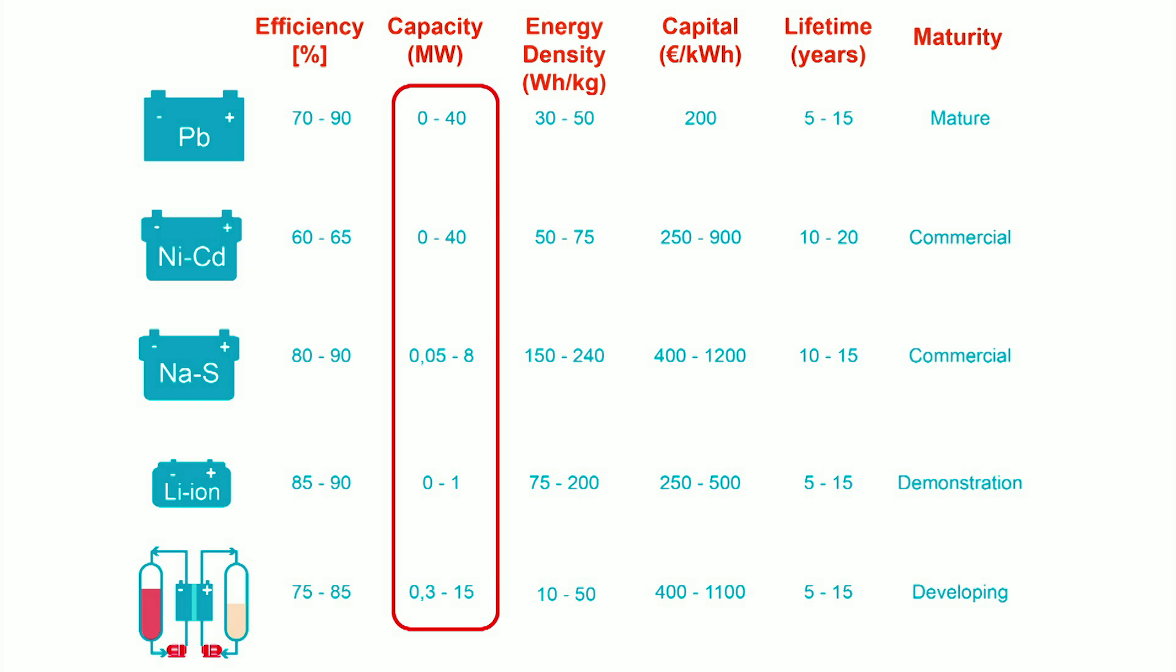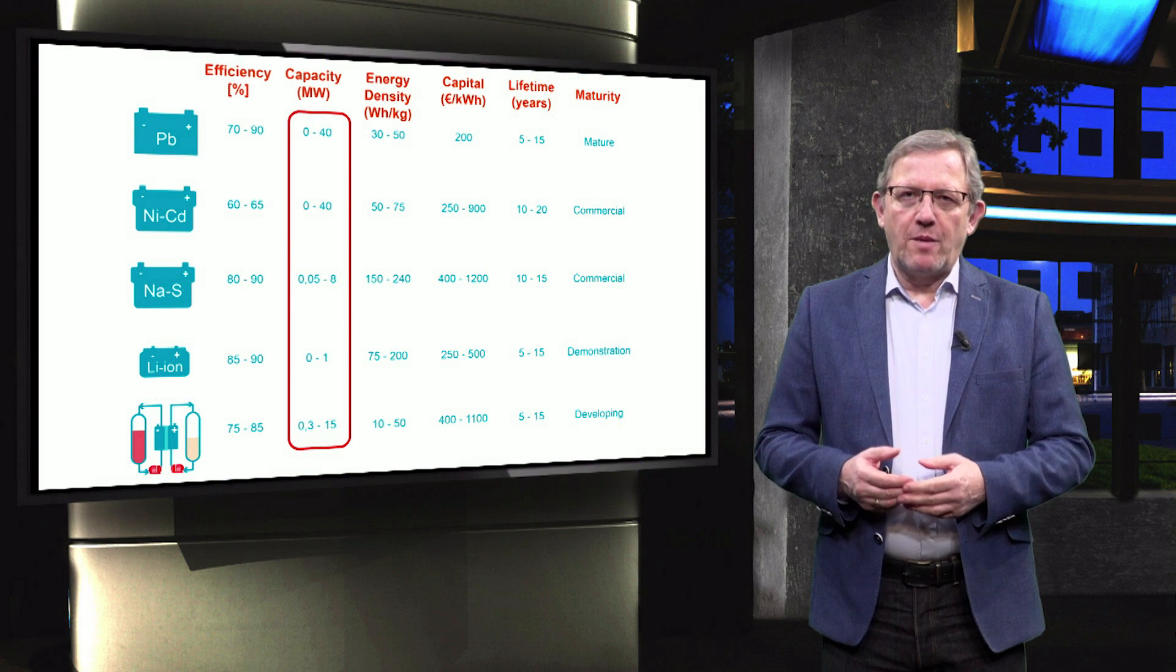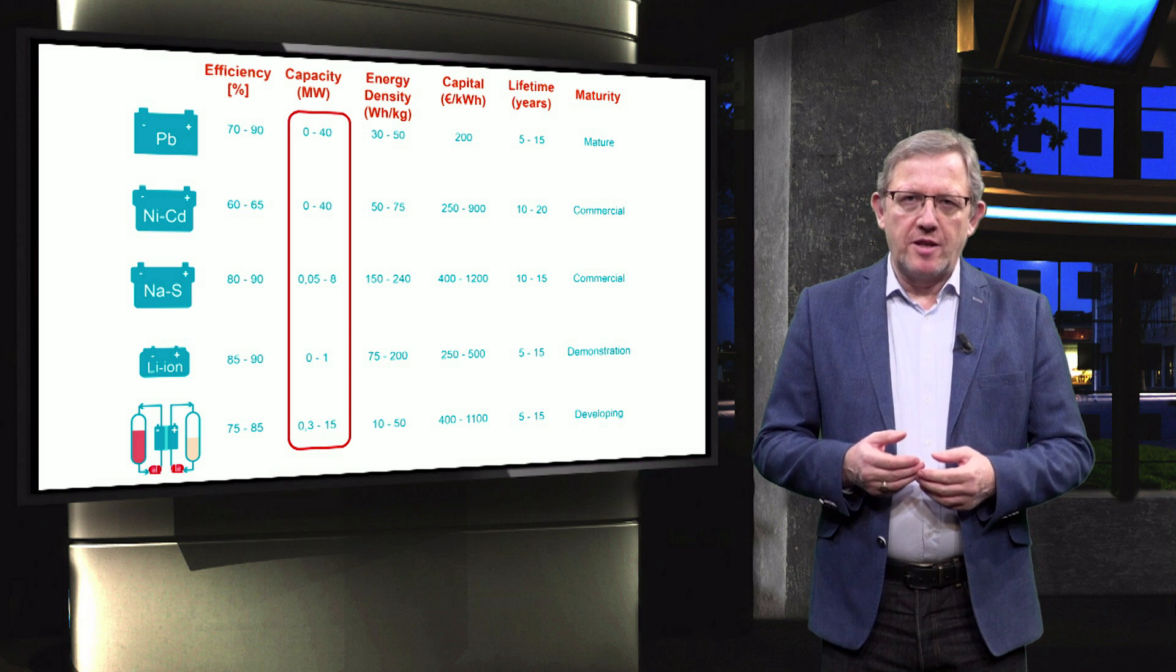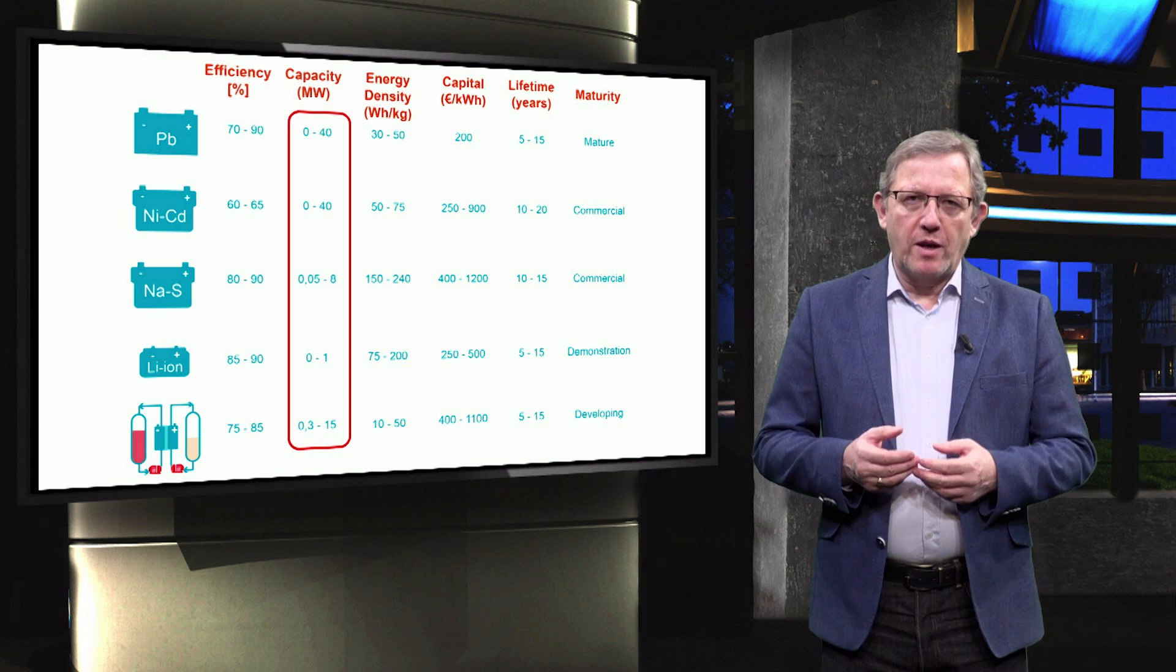Lead acid and flow batteries are suitable options for large-scale grid applications. Recently, many projects based on lithium ion batteries have been carried out, where the installed capacity is over 1 megawatt.